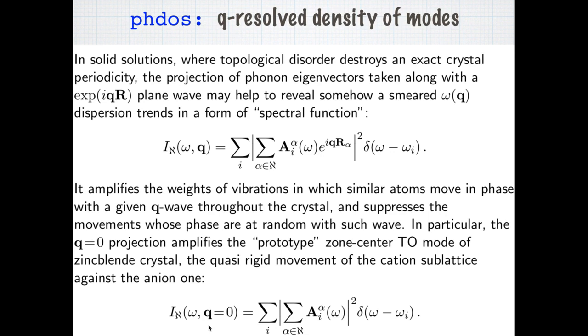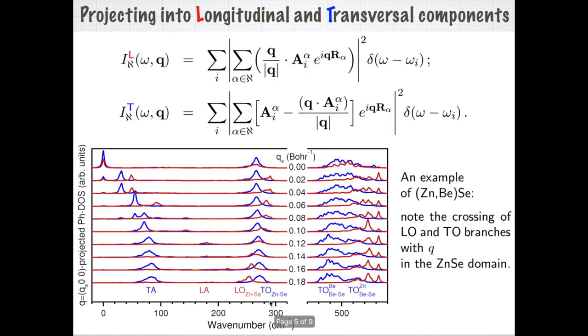As a particular example of this, we can consider the projection onto the Q equals zero value. This will emphasize the vibrations of the different atoms over the supercells which are, strictly speaking, in phase. And this result then can be directly compared with the experimental spectra like Raman spectra or infrared spectra.